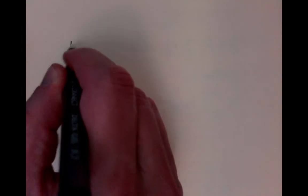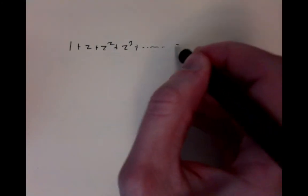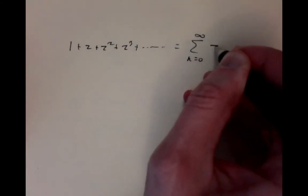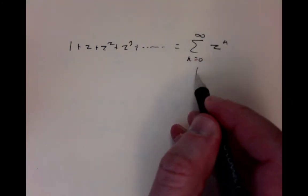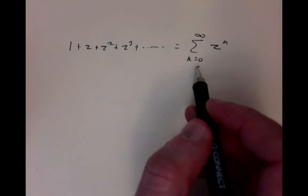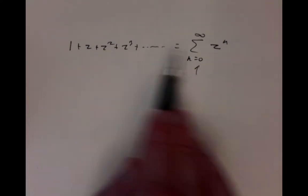This is the seventh lecture for MA1012. In this lecture, we'll think about power series. We can think of a power series as something like an infinite polynomial. Consider as an example: 1 plus z plus z squared plus z cubed plus dot dot dot, going on forever, which we can write as the sum n equals 0 to infinity of z to the n. We could start the sum anywhere and go on from there. The point is that these are powers of the variable z.